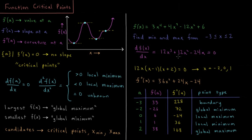The derivative is 12x³ + 12x² − 24x = 0. We can factor this polynomial — there's a factor of 12 and x in every term, so we factor out 12x, and it further factors as 12x(x − 1)(x + 2) = 0. Solving for the roots gives x = −2, 0, and 1. Then the second derivative — the derivative of the derivative — is 36x² + 24x − 24.